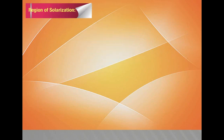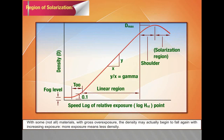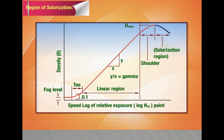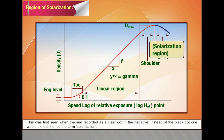Region of solarization: with some materials, with gross overexposure, the density may actually begin to fall again with increasing exposure — more exposure means less density. This was first seen when the sun recorded as a clear dot in the negative instead of the expected black dot, hence the term solarization.